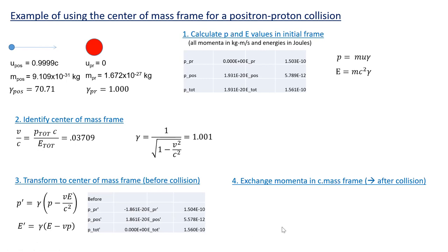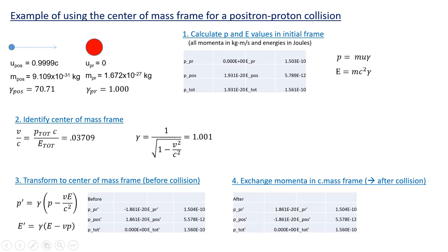The fourth step: once in the center of mass frame, we simply exchange the momenta to get post-collision values. The proton's final momentum equals the positron's initial momentum, and the positron's final momentum equals the proton's initial momentum. Switching these values gives us a new table of momenta and energies after the collision in the center of mass frame.